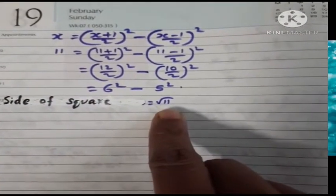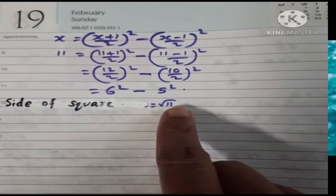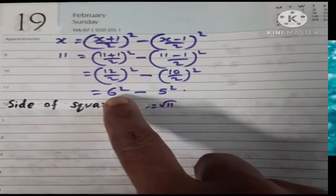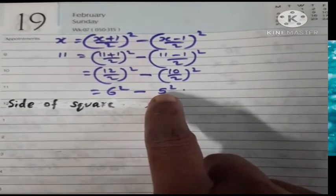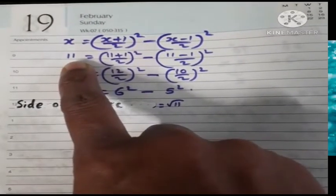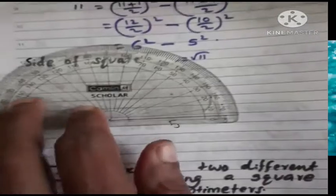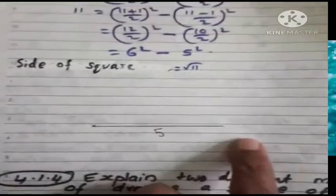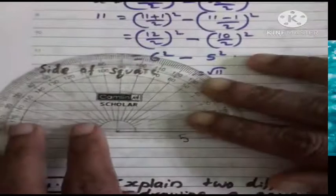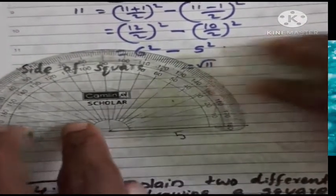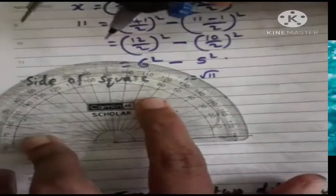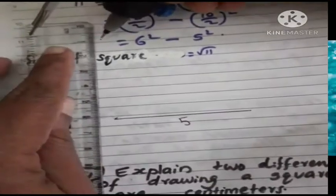A triangle, base 5, height 11. 5, 2. 90 degrees perpendicular.